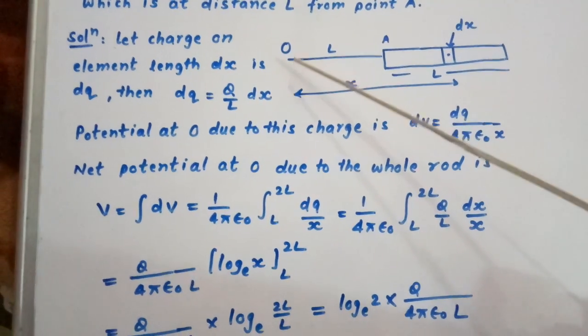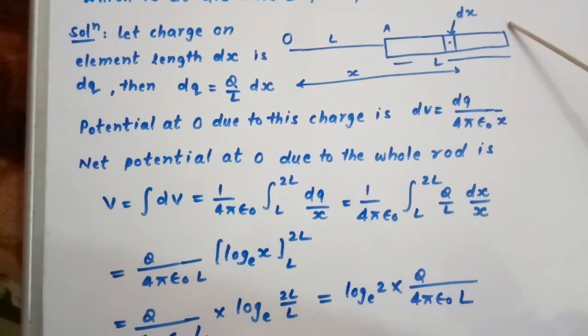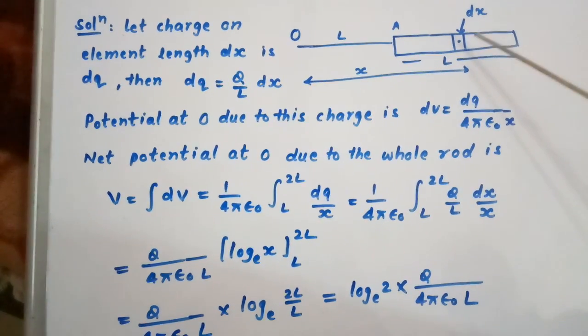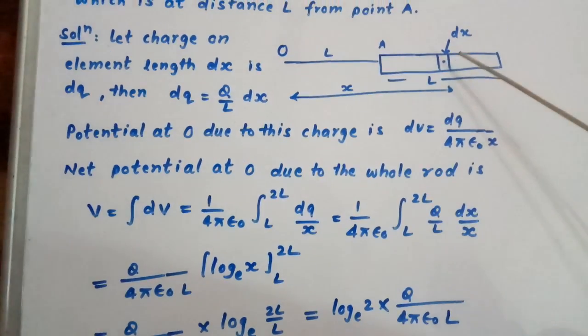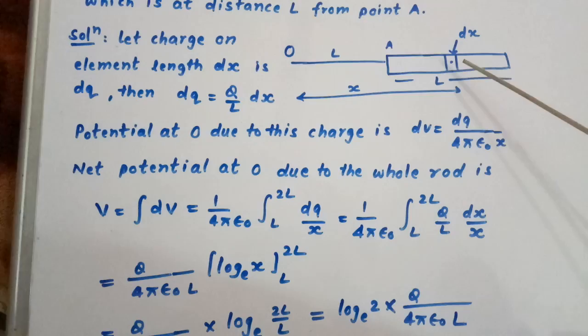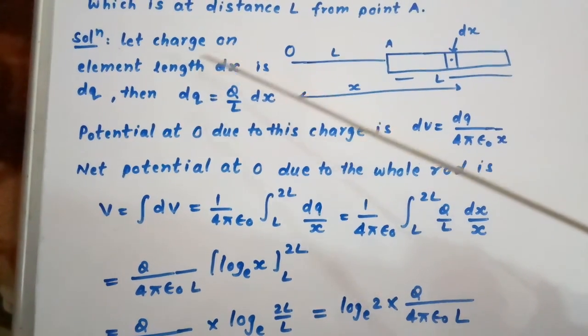Now let's consider the solution. This is the point, this length is L, this is A, this is B. We are going to consider a small element of this rod dx which carries a charge dq.